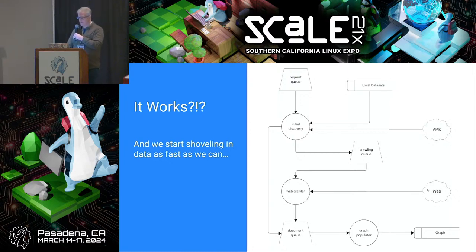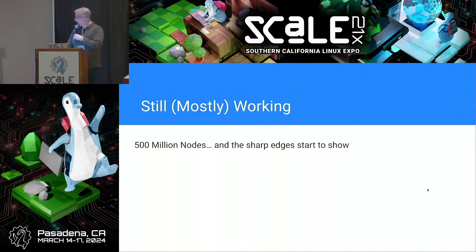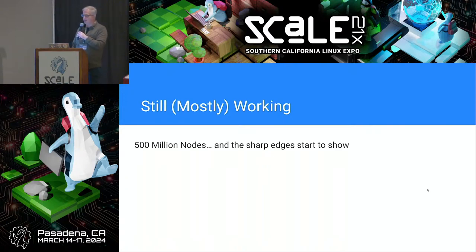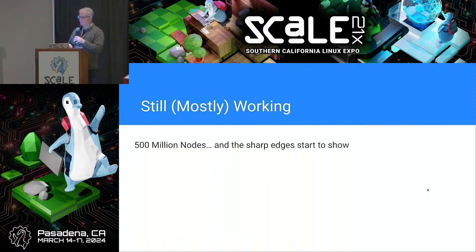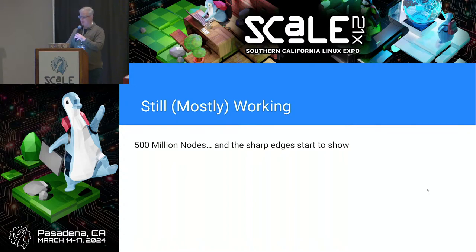And about the time we hit 500 million nodes, the sharp edges start to show. At this point we're 50 times the size of the initial data set we were testing with, and it's real data — and real data has fun real problems with it. Quickly, the problems that showed up: that worker that maintains the graph — the one that takes the document data, chunks it up, and starts to manipulate the graph to put it in — started to slow way down, and we ultimately figured out why. There were some sporadic reports of cross-profile contamination — you're building a profile for George and you get some data about Sally as well, which is not ideal. And then someone came along and said they wanted to change some of those data normalization rules that govern how we represent the data in the graph.